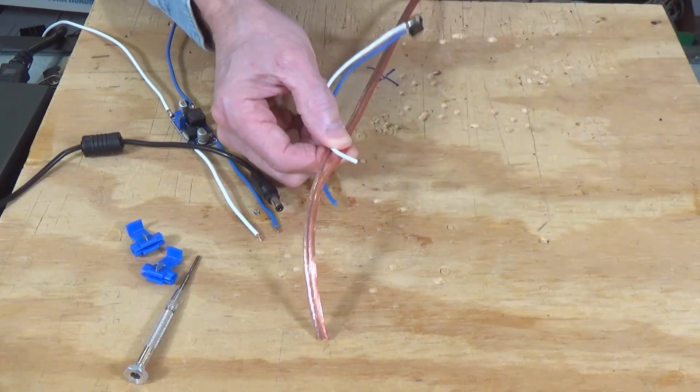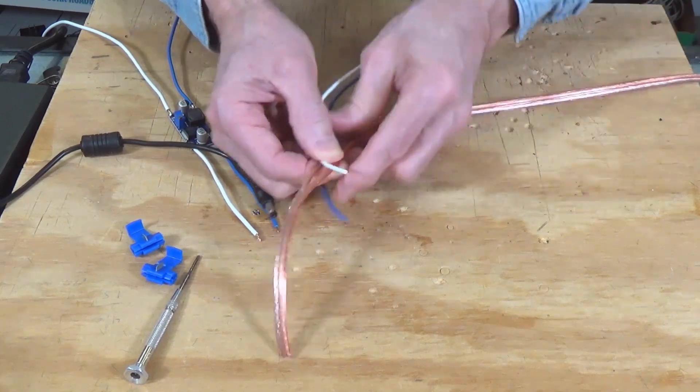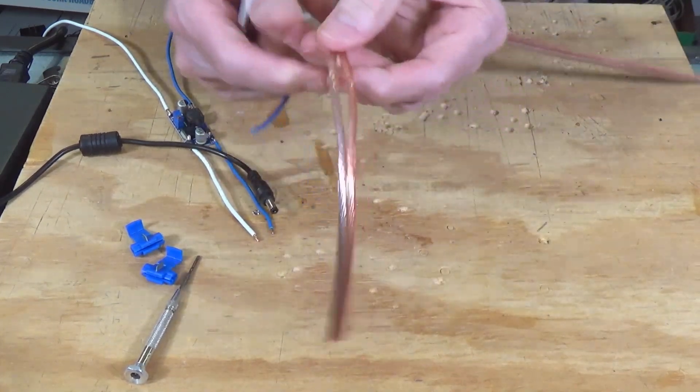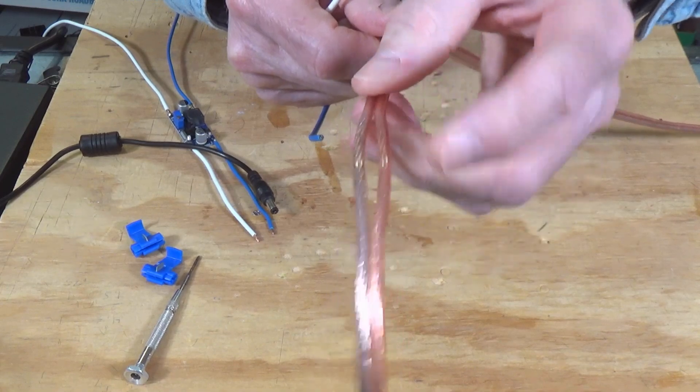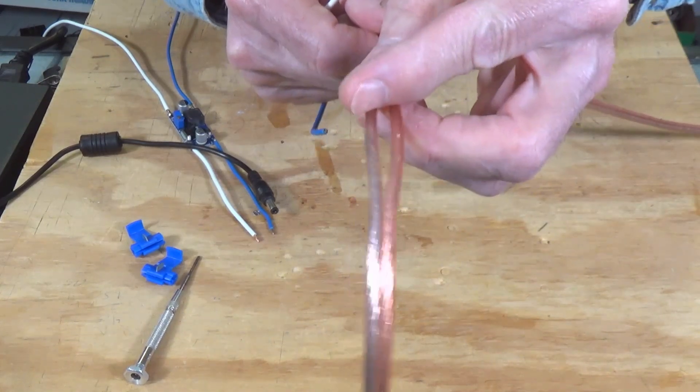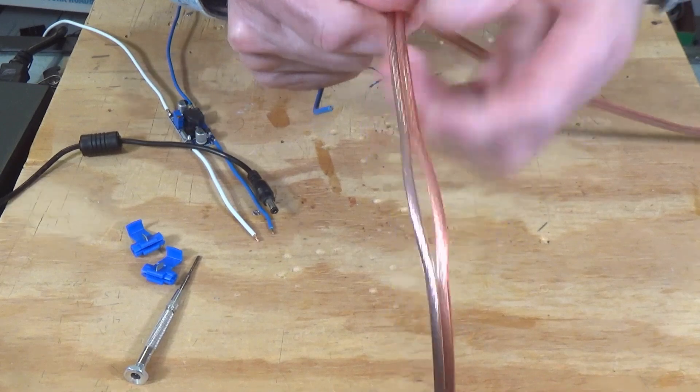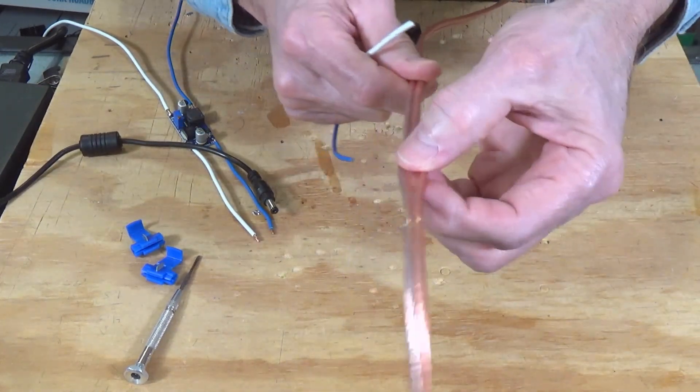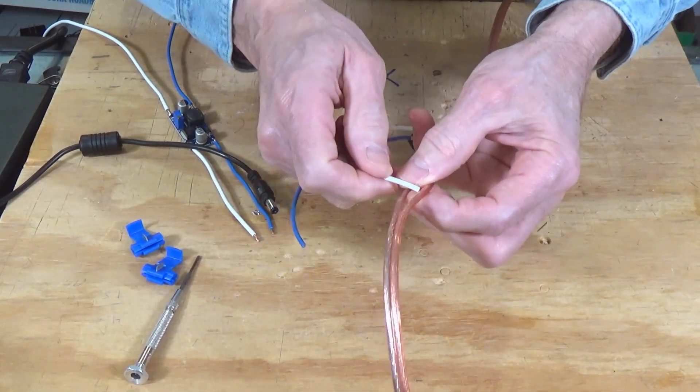And on this zip cord, I don't know if you can see it, but there is a slight difference in color. This is red and that is silver. So you can tell the difference quite easily between them. And I just use red as positive.